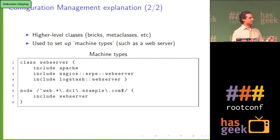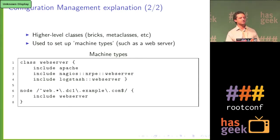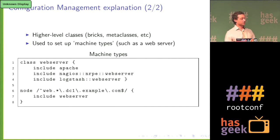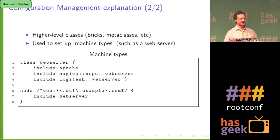Building on that, we have higher-level classes. Some people call these bricks or meta classes. You're describing what you want a machine to do. We could have a web server or database server class that might include multiple classes. Here we have a class web server that includes the Apache package, plus Nagios checks to make sure the web server is operating correctly, and Logstash to push logs somewhere we can read them later. The node definition at the bottom takes a hostname or regex — it matches something like 'web' followed by numbers followed by '.dc1.example.com' — and says to include the web server class, which includes Apache, NRPE, and Logstash all in one.